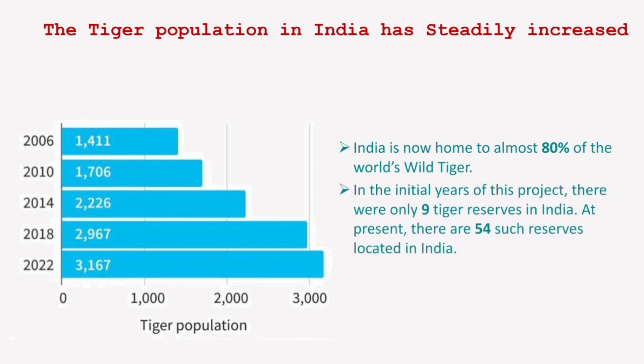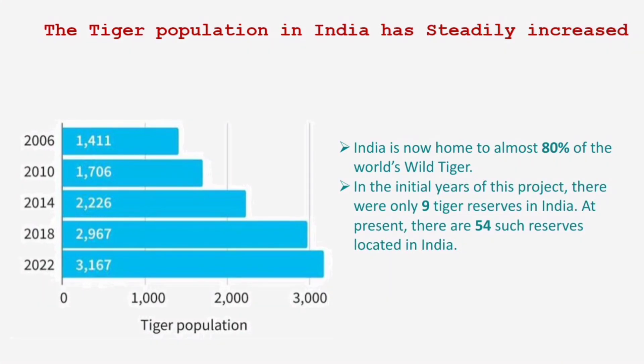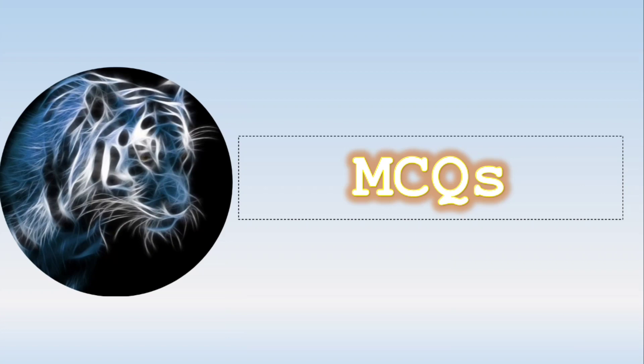In the initial years of this project there were only 9 tiger reserves in India; at present there are 54 such reserves located across India. This is a major plus point for Project Tiger — when the project was initially started there were only 9 tiger reserves, but now 54 tiger reserves are located in different states of India. That is why the number of tigers has also increased.